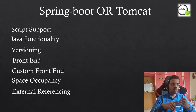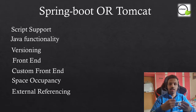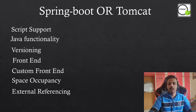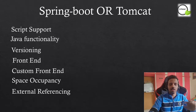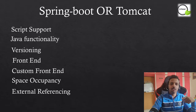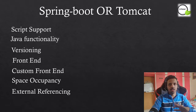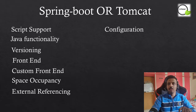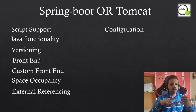Next is external referencing. We've already covered scripts. When we talk about forms, external forms, or web app forms, both Tomcat and Spring Boot support them without major differences. In Tomcat you simply do a restart for cache issues; in Spring Boot you do a clean install. The only differences are the path of referencing and where you place the file — functionality-wise, external referencing is the same for both.